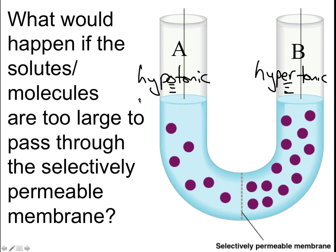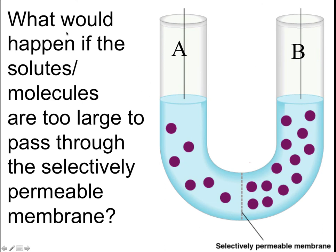Here's the curveball: what would happen if the solutes or molecules are too big to pass through this membrane? The solute should want to go that way, but what if it can't? What if it's blocked — what if it's too big? You can't get a semi-truck through a door you just walked through. A semi-truck can't fit. So what if the solute is too big to fit through? The solutes just bounce off of the membrane.